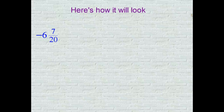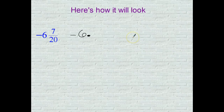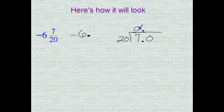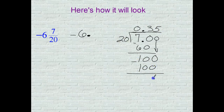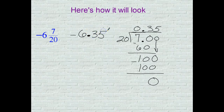Negative six and seven twentieths. So we have negative six and something in terms of the fraction. Let's go with the long division — this is our last one. Numerator divided by the denominator. Five times twenty is one hundred and we have a terminating decimal of thirty-five hundredths. So the final answer is negative 6.35.